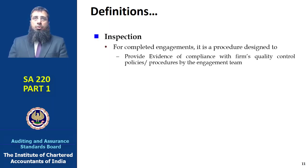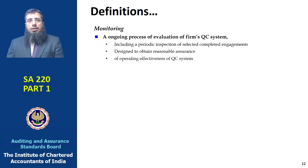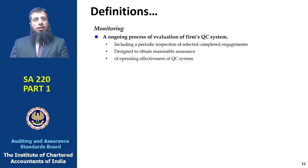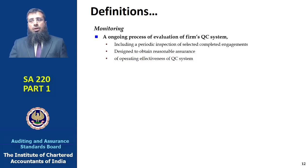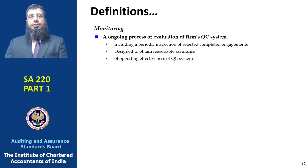Inspection is done only in case of completed engagements and is a procedure designed to provide evidence of compliance with the firm's quality control policies and procedures. A listed entity refers to stocks or shares quoted and traded on a recognized stock exchange. Monitoring is an ongoing process of evaluating the firm's quality control system — not a one-time process — including periodic inspection of selected assignments. The objective is to obtain reasonable assurance of the operating effectiveness of the quality control system.